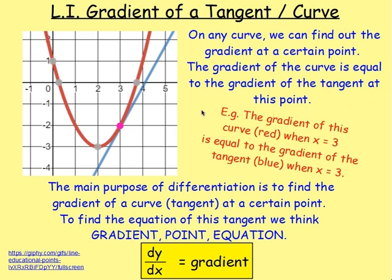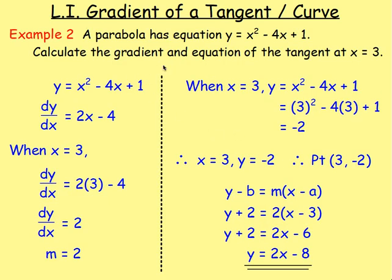We then looked at the main purpose of differentiation: to work out the gradient of a curve at a certain point. The gradient of that curve at that point is the exact same as the gradient of the tangent. So if you differentiate, you will get the gradient of the tangent. And if you want the equation of the tangent, you can use the gradient-point equation from the straight line chapter. Differentiate to get the gradient, replace x to get a number, then sub x into the original equation to find y, giving you the point. Then apply gradient-point equation.